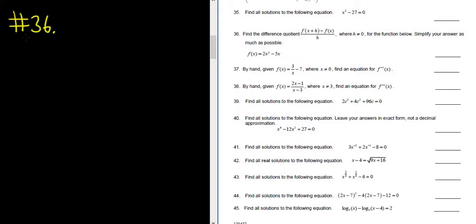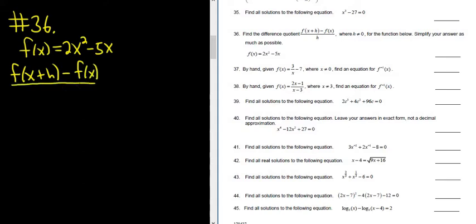So the function given is f of x equals 2x squared minus 5x. And we have to find the difference quotient for this function. So the difference quotient is f of x plus h minus f of x, and it's all over h.